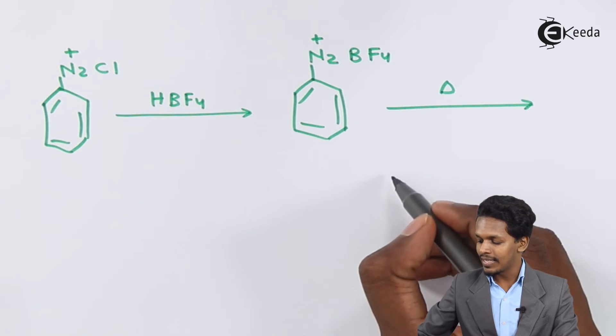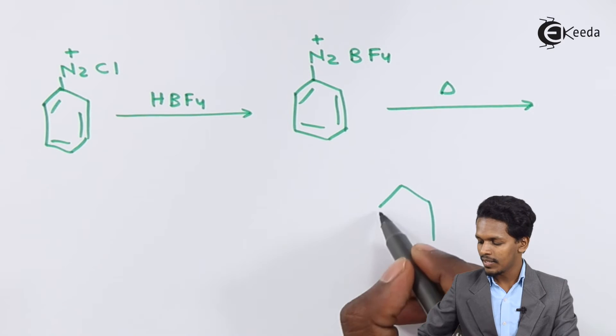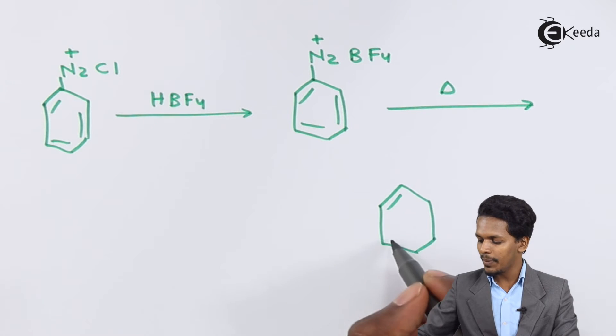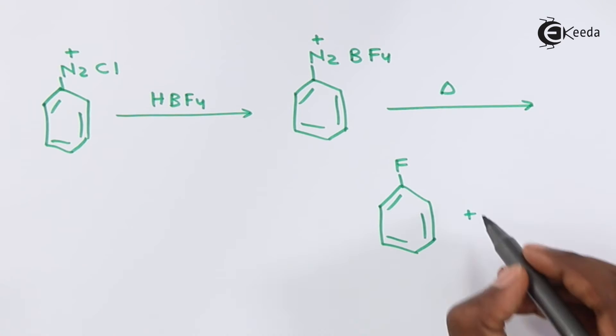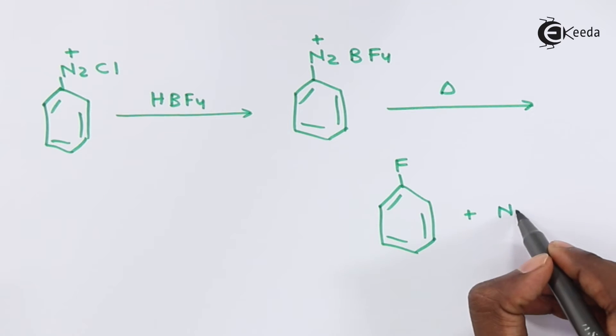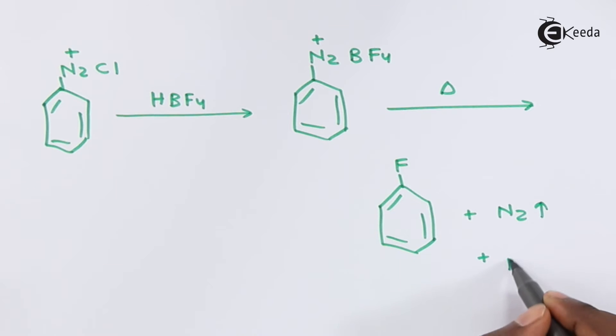We could get the main product, which is fluorobenzene, along with the other byproducts N2 and BF3. So therefore, we have prepared an aryl fluoride.